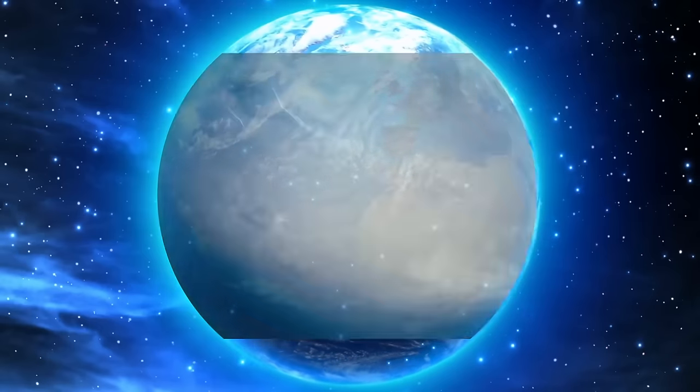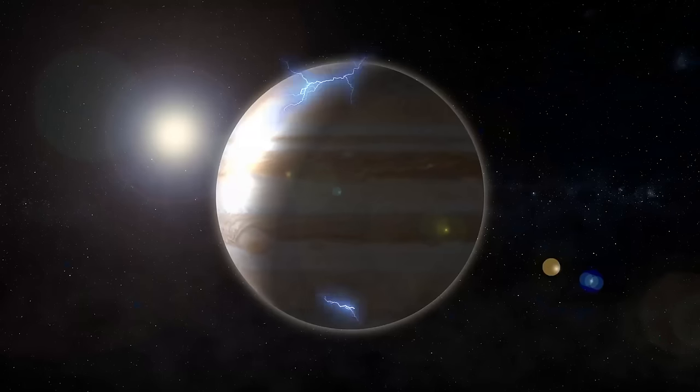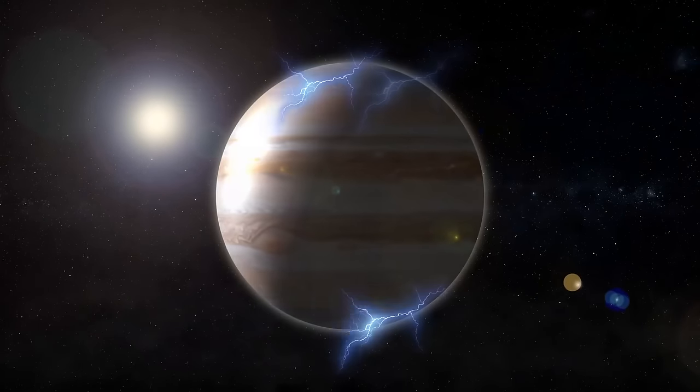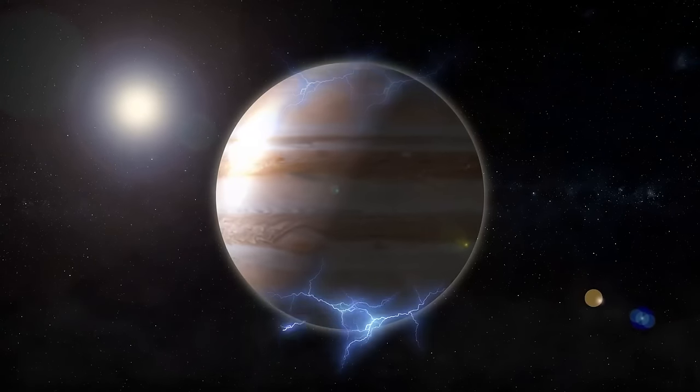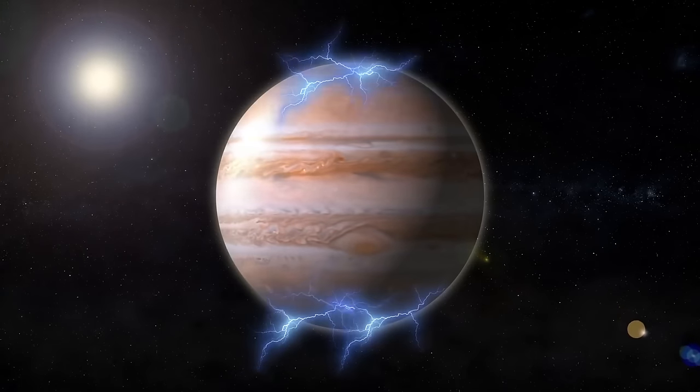On our planet, lightning avoids the poles. It prefers to zap the equator. Meanwhile, the gas giant's equatorial zone sees no lightning. It lights up the planet's poles. And its peak frequency is 4 volts per second.